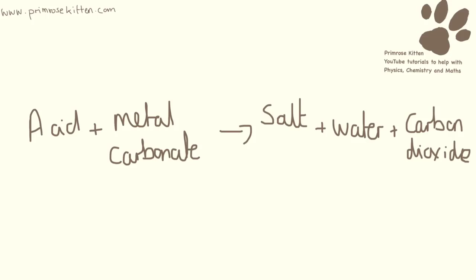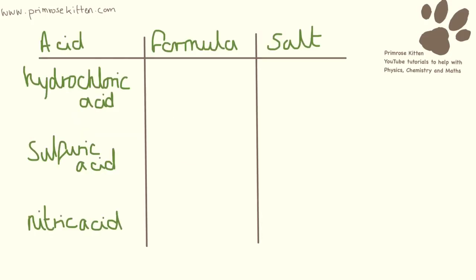If you see a gas coming off and you collect that gas and it turns limewater cloudy, that gas is going to be carbon dioxide. The salt here is going to be the tricky thing to name. Whenever we are using acids, you need to know the formula of the common acids and what type of salt is going to be produced.